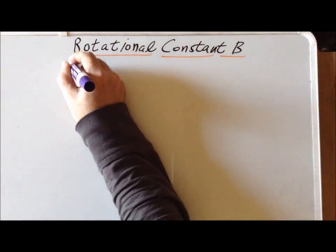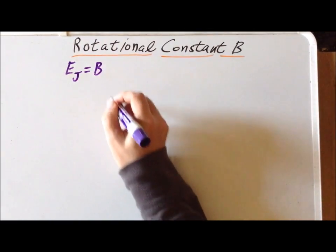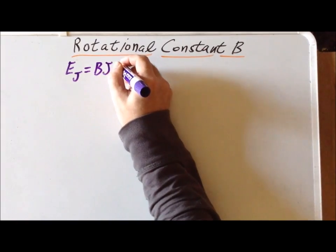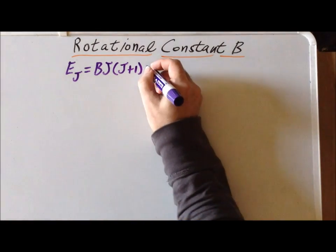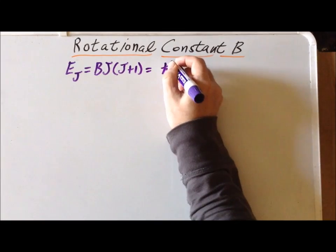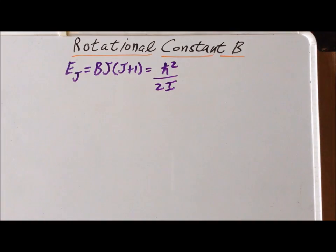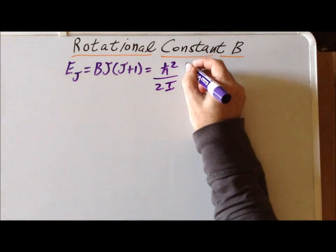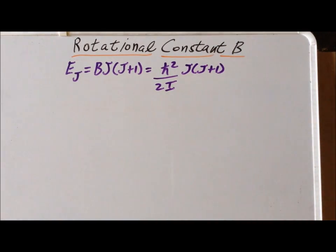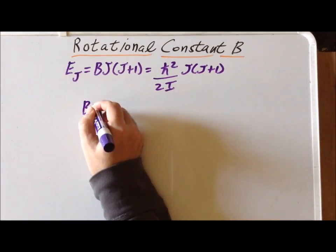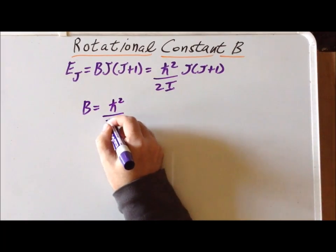Recall that the energy of a rigid rotor level J can be written as the rotational constant B times J times J plus 1. This formula is equivalent to the formula where we have h-bar squared divided by 2I, where I is the moment of inertia of the molecule, times J times J plus 1. So we can see that there is an equivalence between the rotational constant B and h-bar squared divided by 2I.